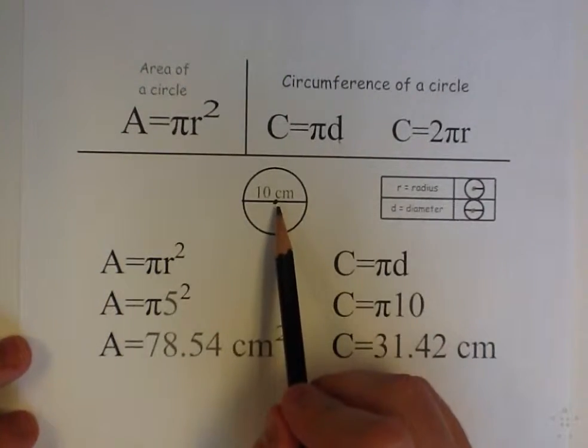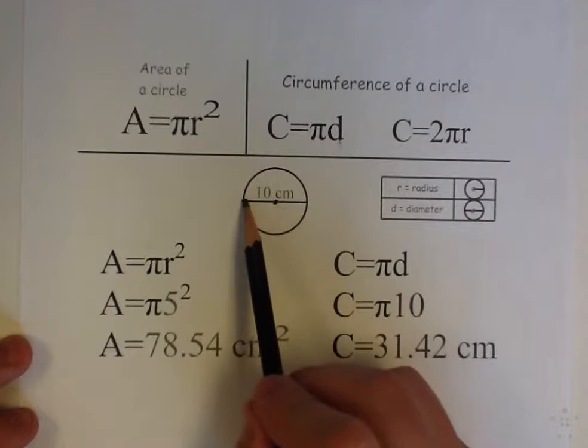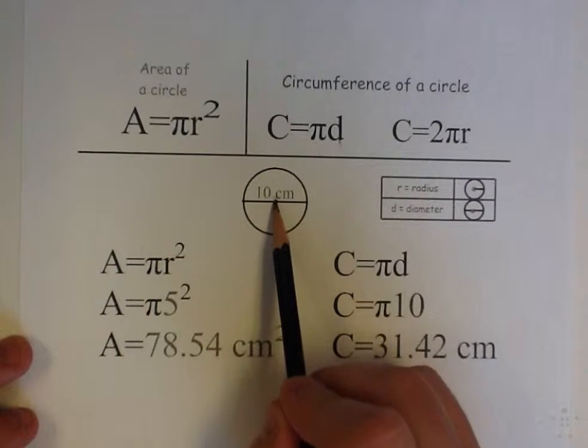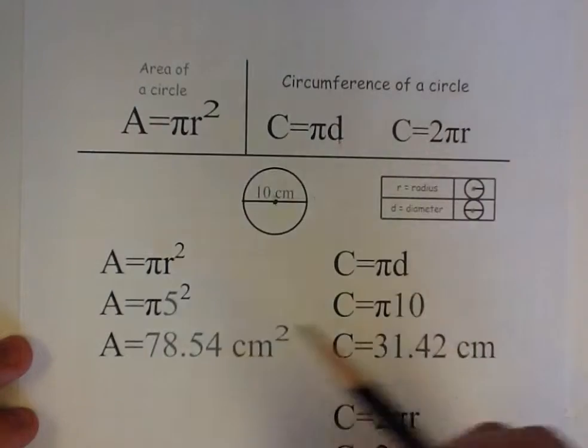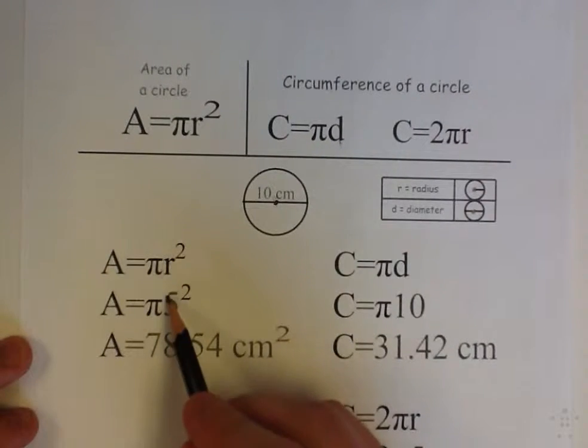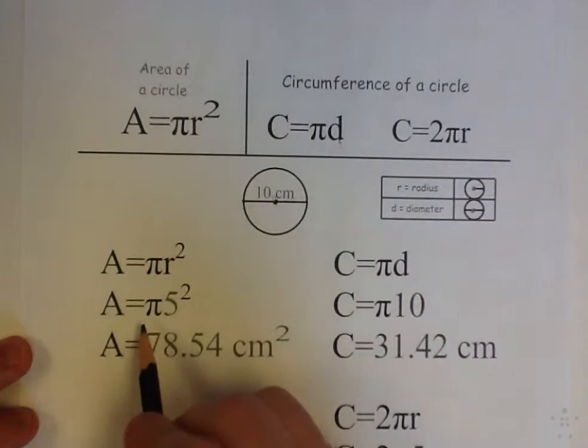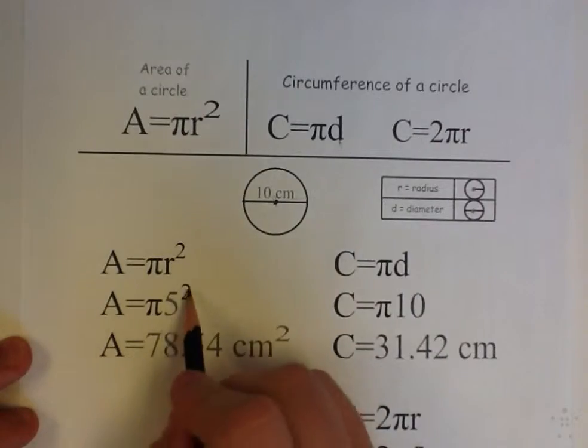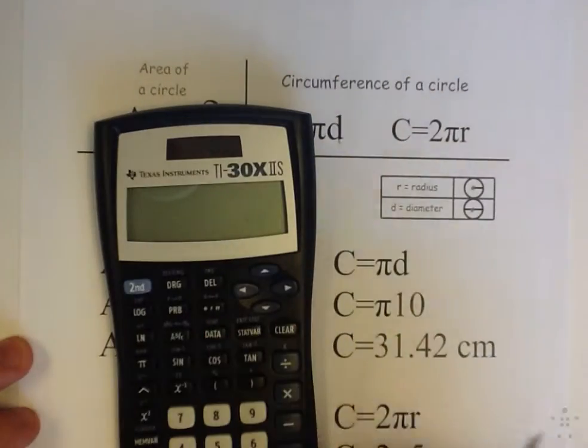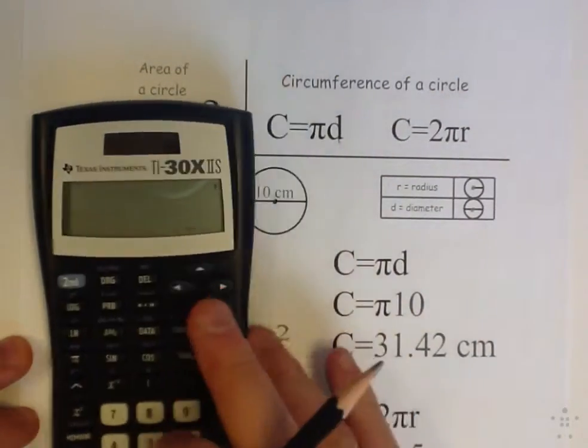And then I substitute in my radius. It doesn't tell us what the radius is, but I know that if the whole thing is 10, half of it, a radius, would be 5. So I plug in 5. My radius is 5 here. So pi times 5 squared. And if I do that on my calculator, you'll see that I got it.